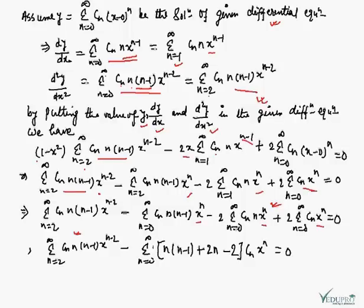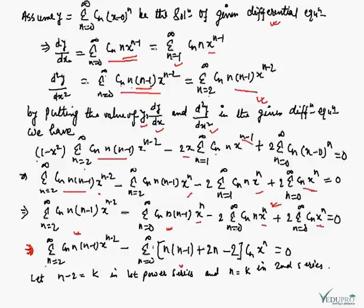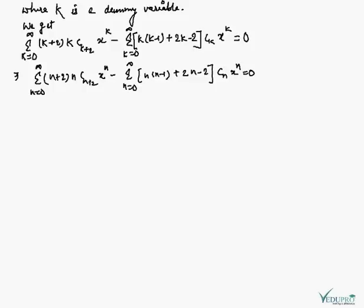We have n = 0 to infinity. We see that these three power series have the same summation indices and the same power of x. Using the substitution k as a dummy variable to shift the index of the first series, we get Σ(k=0 to ∞) (k+2)(k+1)c_{k+2} x^k minus Σ(k=0 to ∞) [k(k-1) + 2k - 2] cₖ x^k = 0.